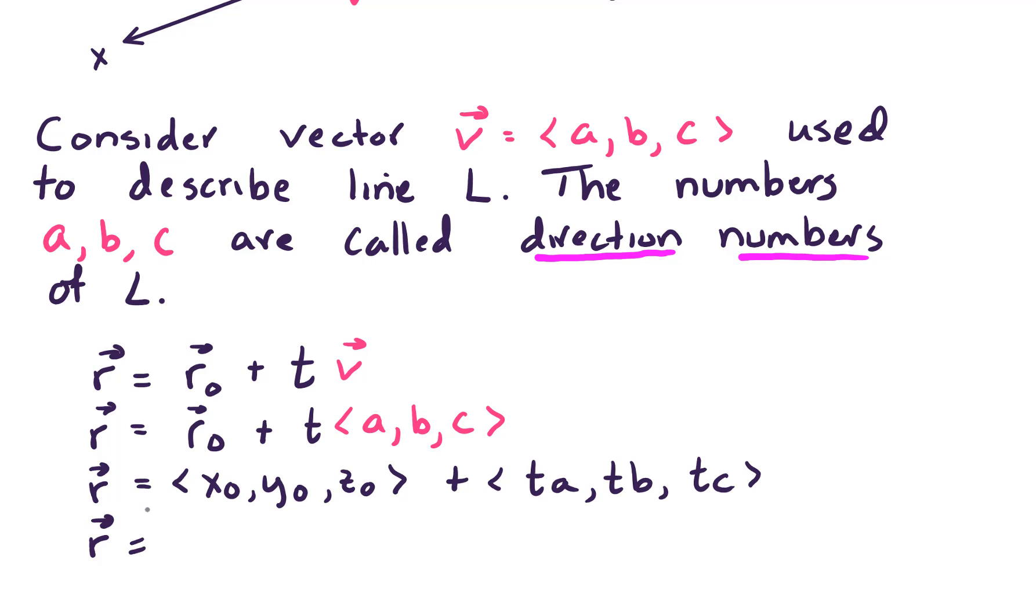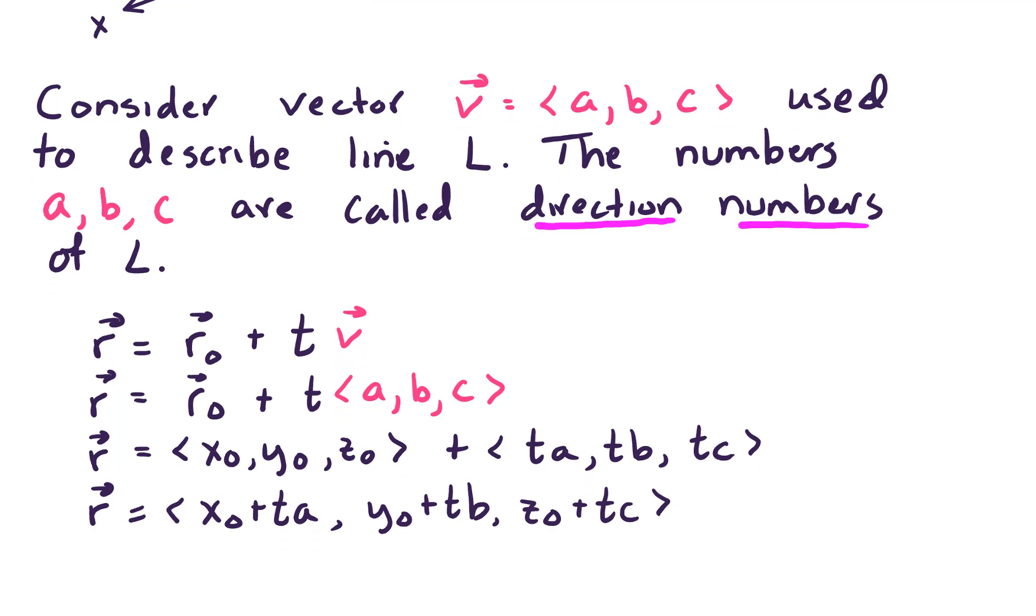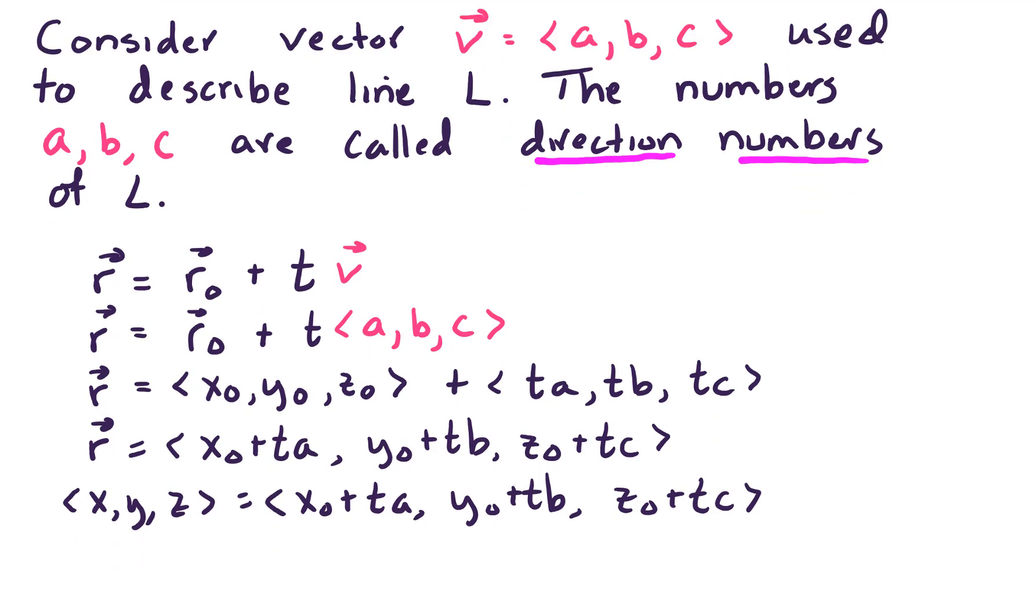And performing vector addition, what we end up getting is we get that the line L, or vector R, has first component X-naught plus TA, second component Y-naught plus T times B, and third component Z-naught plus T times C. And if we were to just pull out these first, second, and third components, which describe X, Y, and Z, we get three equations, and these are called parametric equations.